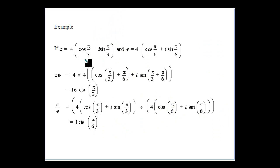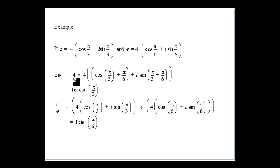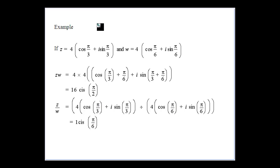Here are some worked examples of multiplication and division. Two complex numbers each with modulus 4, arguments π/3 and π/6: for multiplication, the moduli multiply to 16 and arguments add to give π/2. For division, the moduli divide to give 1 and π/3 minus π/6 gives π/6.